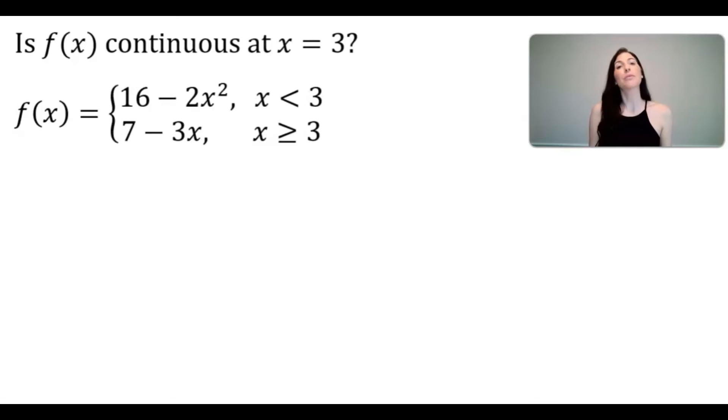As I go through the justification of whether f of x is continuous at x equals 3, I'm going to be using the definition of continuity. The definition of continuity has three steps and I will be going through those three steps as I discuss this. The definition of continuity's first step is to determine if f exists at the given x value, so whether f of c exists, and whatever x value is given in the problem we call that c.